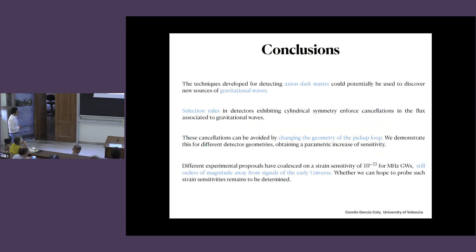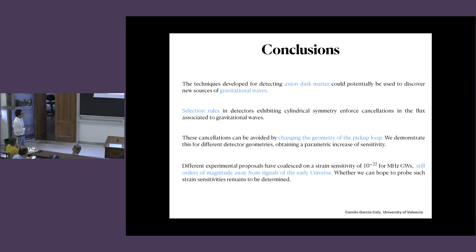Let me conclude. The techniques developed for detecting axion dark matter can potentially be used to discover new sources of gravitational waves. Selection rules in detectors exhibiting cylindrical symmetry force cancellations in the flux associated with gravitational waves, but these cancellations can be avoided by changing the geometry of the detector. For different detector geometries, one can obtain a parametric increase of sensitivity, which is highly non-trivial. Different experimental proposals have coalesced on a strain sensitivity of order 10^-22, still orders of magnitude away from signals of the early universe.